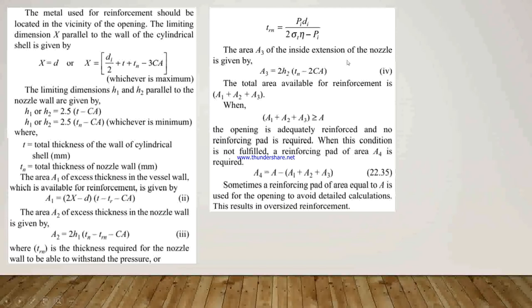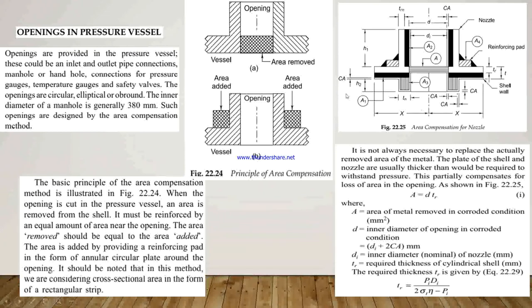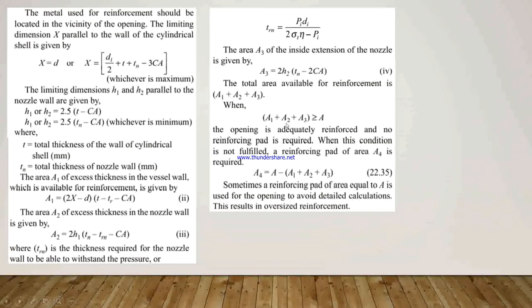The area A3 of the inside extension of the nozzle is: A3 = 2·H2·(TN − 2·CA). The total area available for reinforcement is A1 + A2 + A3. When the sum of A1 + A2 + A3 is greater than A, no reinforcing pad is needed. But when the sum is less than A, a reinforcing pad with additional area A4 is required, where A4 = A − (A1 + A2 + A3). Sometimes a reinforcing pad of area equal to A is used to avoid detailed calculation, resulting in oversized reinforcement.